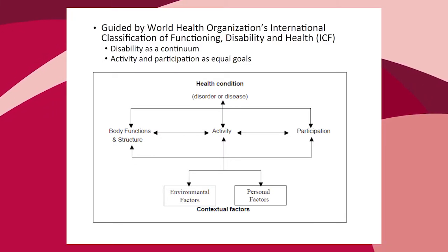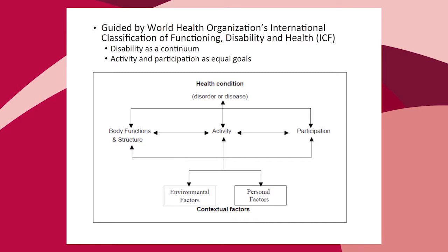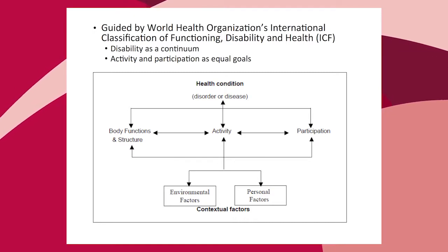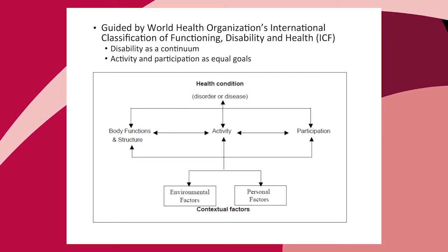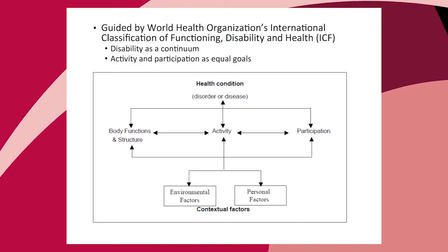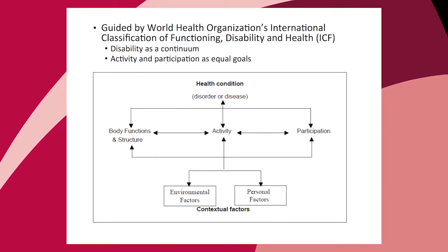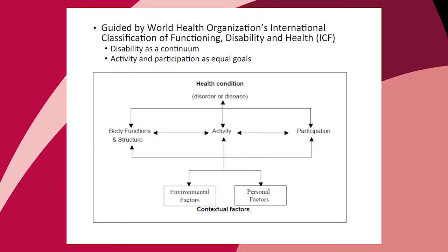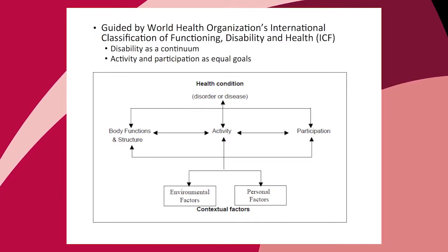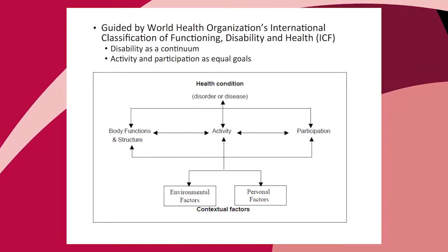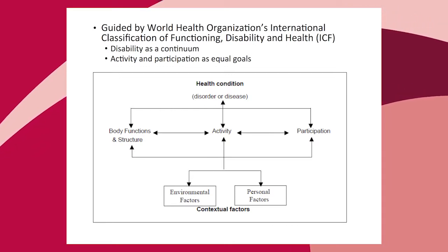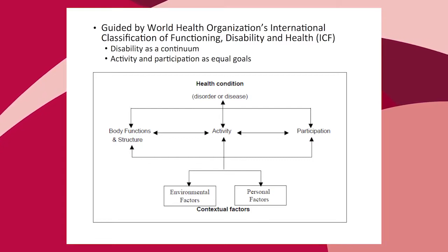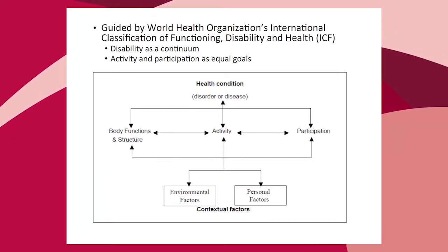In this model, an individual may have a particular health condition, disorder, or disease that influences body function and structure, their capability to perform certain activities, and their participation in the community. We also need to think about environmental factors and personal factors that provide context for the activity or participation.